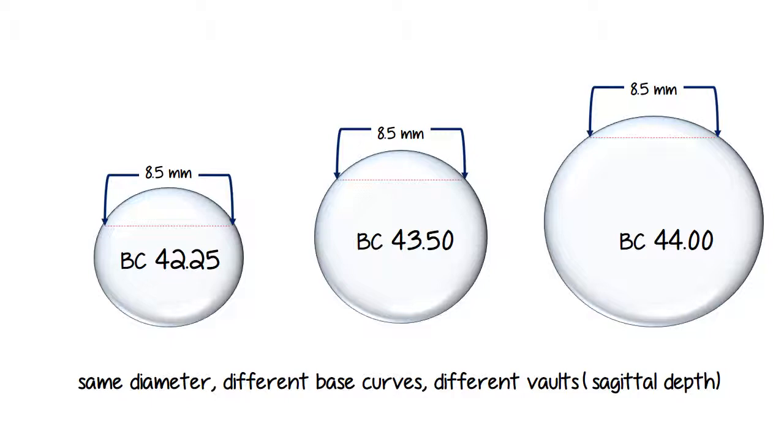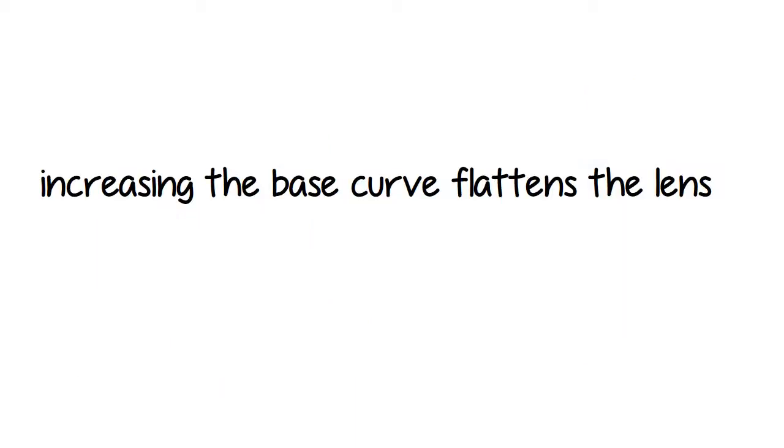One more quick note about base curve before we move on. With contact lenses, the base curve is measured on the back of the lens, which is the opposite of eyeglass lenses. With eyeglass lenses, remember the base curve is the front curvature of the lens, and the power curve is the back curve. With contact lenses, the base curve is the back curve. The moral of that story, increasing the base curve flattens the lens.